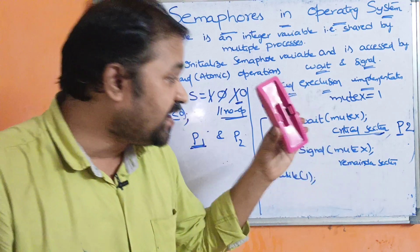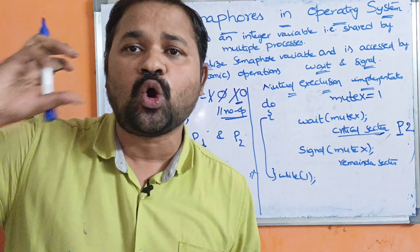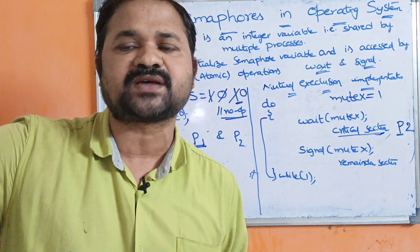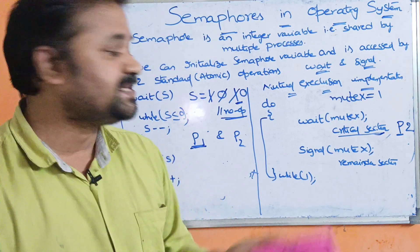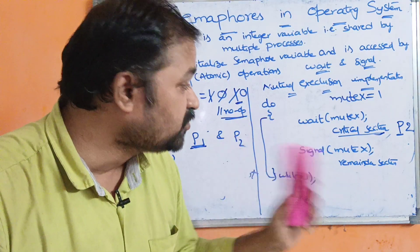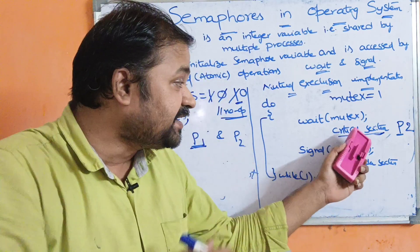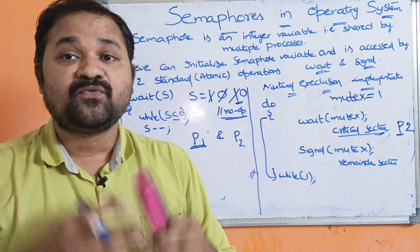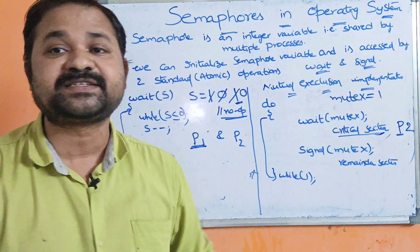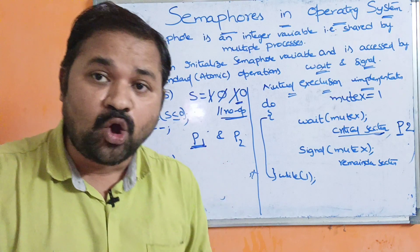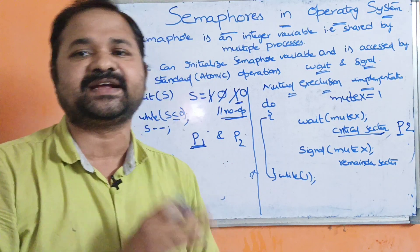So like this, we can implement mutual exclusion with the help of semaphores. When one process is in the critical section, no other processes are allowed to enter — this is called mutual exclusion. P2 can enter the critical section only after P1 comes out.